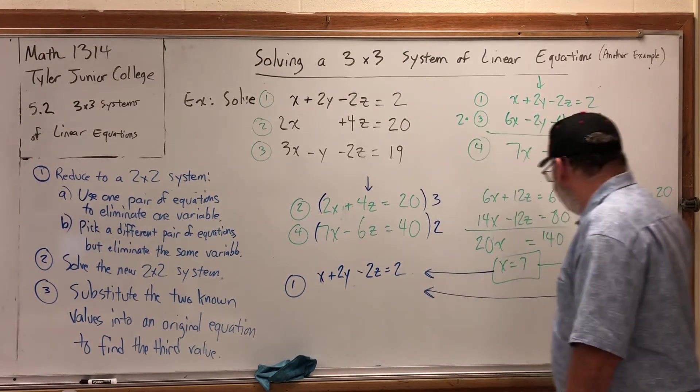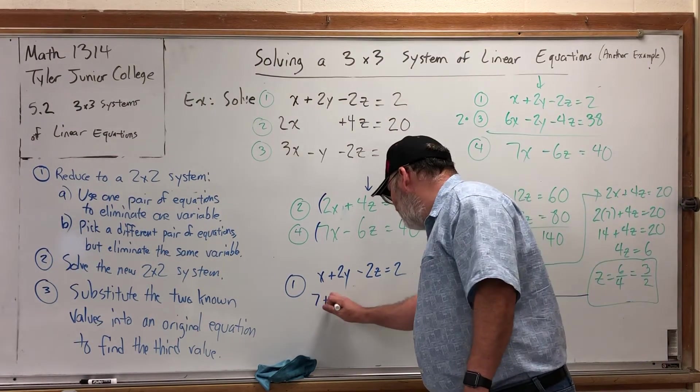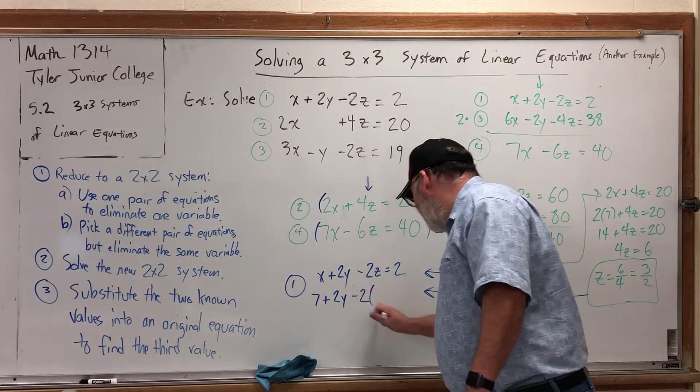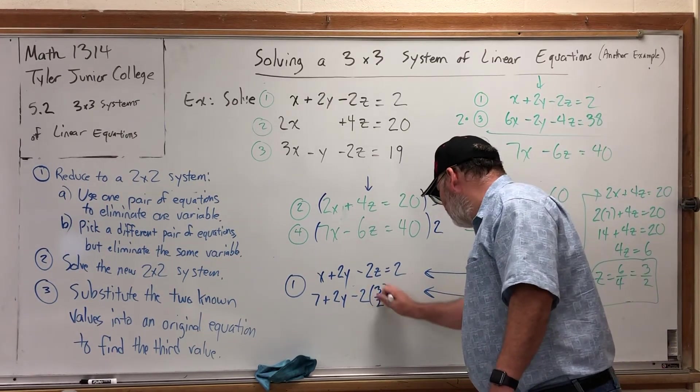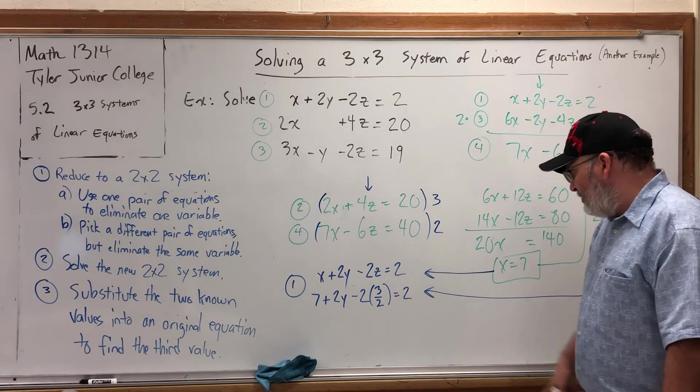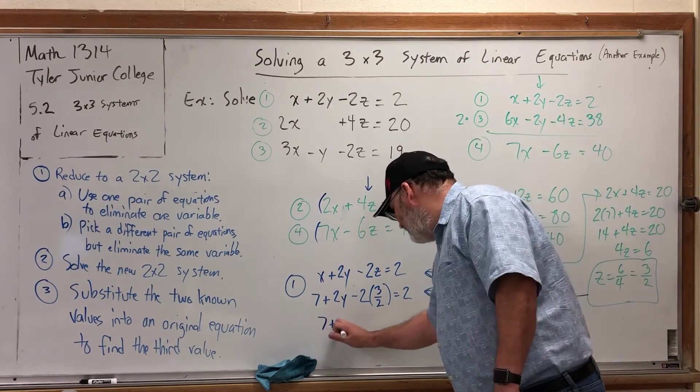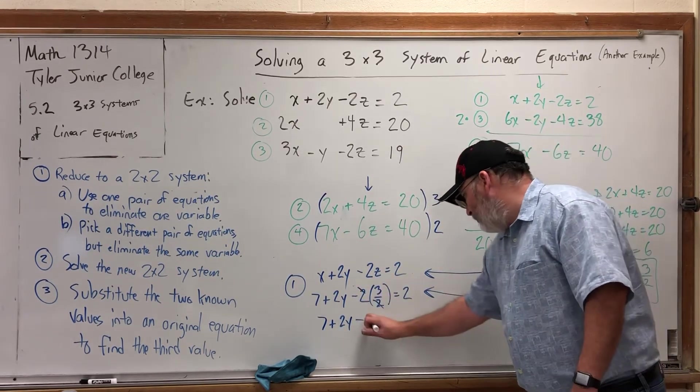Equation 1 says x plus 2y minus 2z is equal to 2. If we have x equals 7 plus 2y minus 2 times z, which was 3 halves, all that's supposed to equal 2. Let's clean up the fraction. 7 plus 2y. On the fraction, the twos cancel, leaving a minus 3.